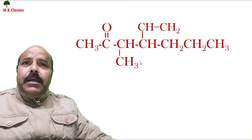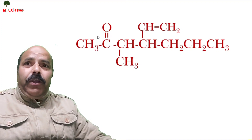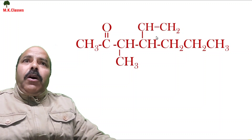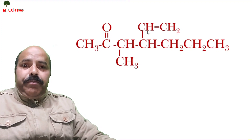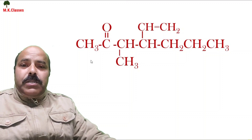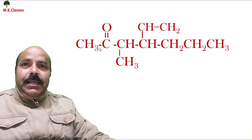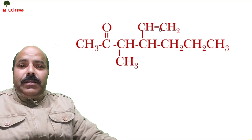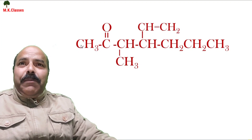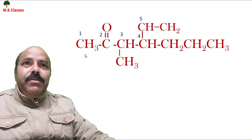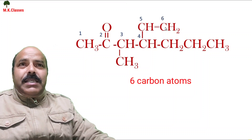Let's take another example. In this compound, the ketonic functional group is present. One methyl group is also there as a substituent, and a carbon-carbon double bond is also present in this hydrocarbon. We have to select a chain which contains the functional group, substituent, and carbon-carbon double bond. The parent chain has 6 carbon atoms.